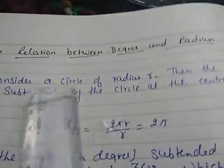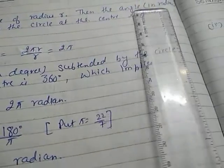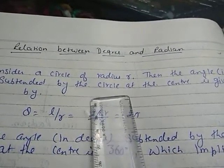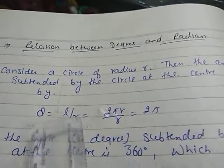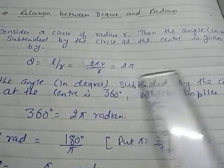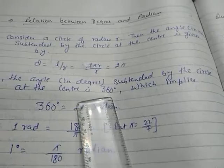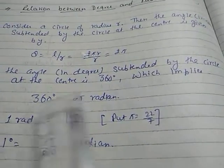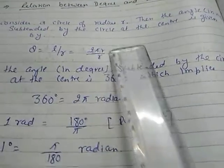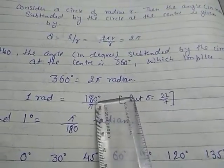Now we need to find the relation between degree and radian. Consider a circle of radius r; the angle in radians subtended by the circle at the center is θ = l/r. The length of the arc for a full circle is 2πr, so θ = 2πr/r = 2π. Also, the angle in degrees subtended at the center is 360°, which implies 360° = 2π radians, since 2π is one complete revolution.